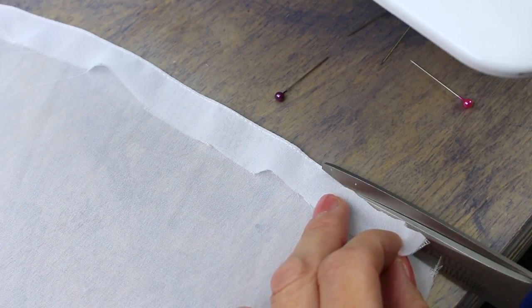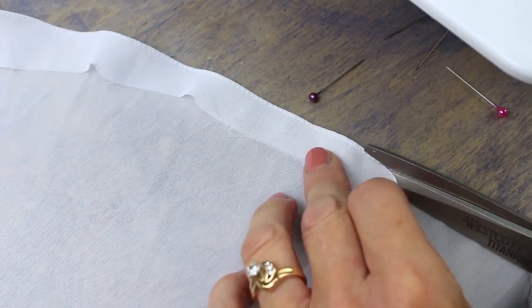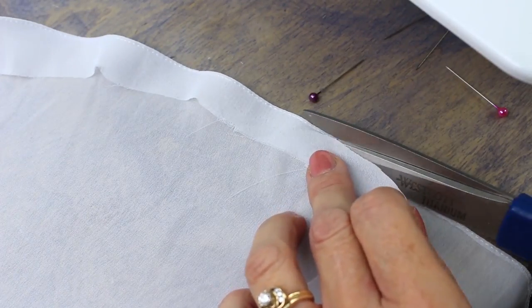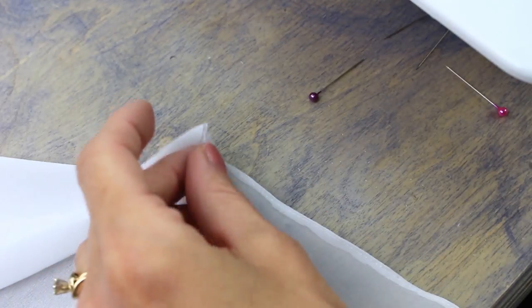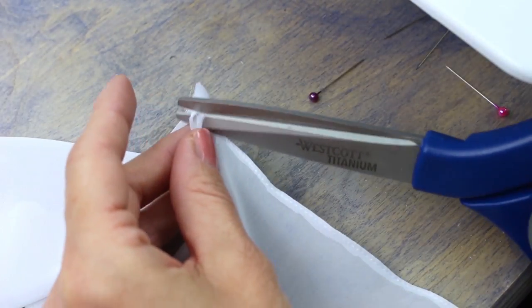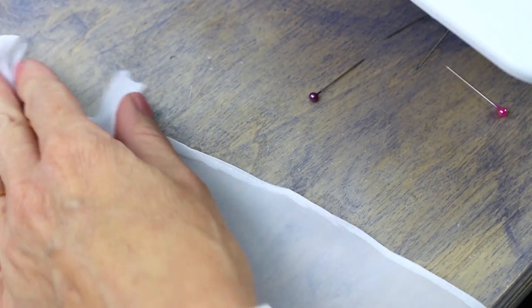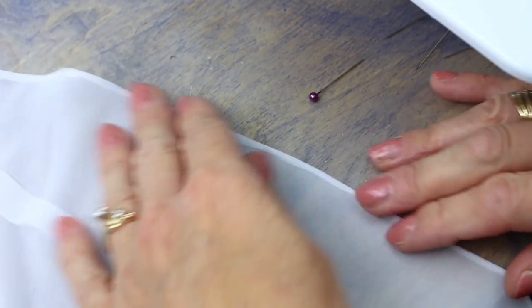When you're done, use a pair of sharp fine tipped scissors to cut away the remaining fabric as close as you can to your line of stitching without snipping into the stitching itself. Exercise caution so you don't accidentally snip into your dress fabric. Do this all the way to the end.